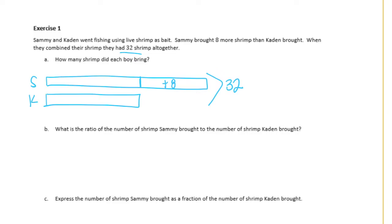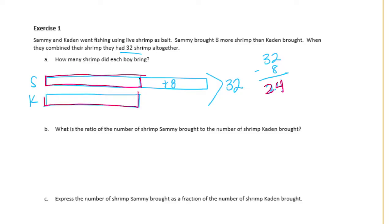We take 8 off of 32, leaving 24. That 24 is split equally between the two equal portions, so 24 divided by 2 is 12. Each equal piece is 12, which means Sammy brought 12 plus 8, or 20 shrimp, and Kaden brought 12 shrimp.